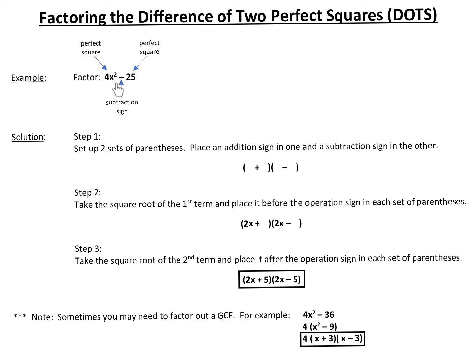The square root of 4x² would be 2x — the square root of 4 is 2, and the square root of x squared is x. We put 2x in the first spot in each parenthesis. Step three: take the square root of the second term and place it after the operation sign in each set of parentheses. Our second term is 25; the square root of that is 5. So we put a 5 here and a 5 here, leaving us with (2x + 5)(2x − 5).